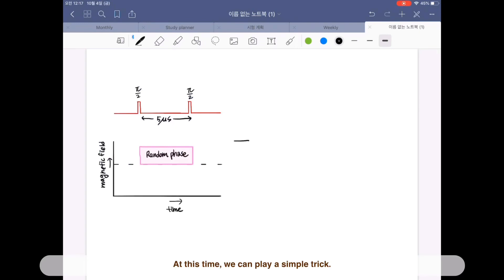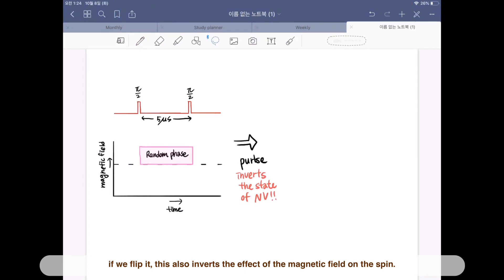At this time, we can play a simple trick. When we apply a pulse that inverts the state of the NV, if we flip it, this also inverts the effect of the magnetic field on the spin.